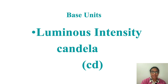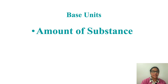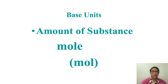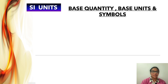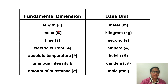Next, luminous intensity: the unit is candela, represented by cd. Finally, amount of substance: the unit is mole, represented by mol. These are the base quantities and their base units and symbols. The dimensions of these fundamental quantities are represented using square bracket notation — for example, length is represented as [L].